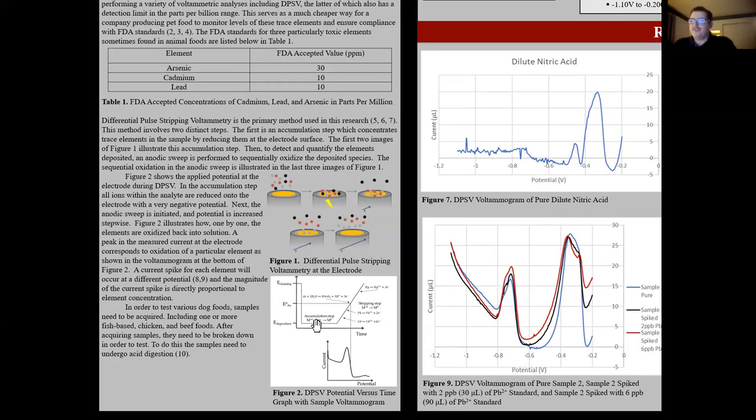Following that in figure two, you'll see a DPSV potential versus time graph with a sample voltammogram. You can see the accumulation step, which is the same as that second image in figure one, where all the ions in solution are reduced onto the electrode. And then as potential increases, different metals with different standard reduction potentials will be oxidized off the electrode. This will result in peaks in a voltammogram, which you can see as the lower part of figure two.